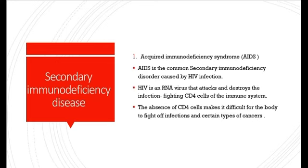Secondary Immunodeficiency Disease: One of the Secondary Immunodeficiency Diseases is Acquired Immunodeficiency Syndrome. AIDS is the common secondary immunodeficiency disorder caused by HIV infection. HIV is an RNA virus that attacks and destroys the infection-fighting CD4 cells of the immune system. The absence of CD4 cells makes it difficult for the body to fight off infections and certain types of cancer.